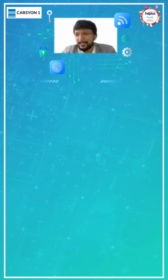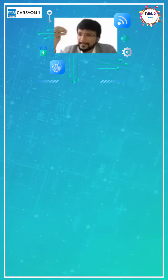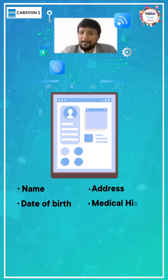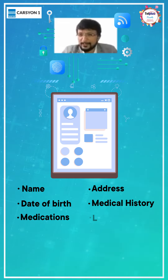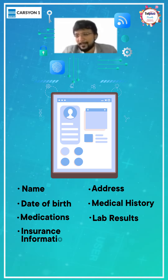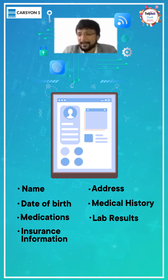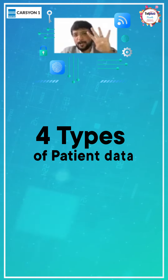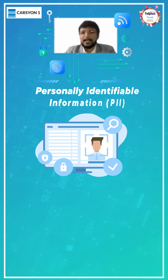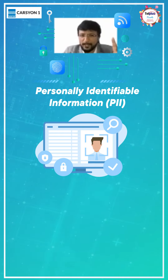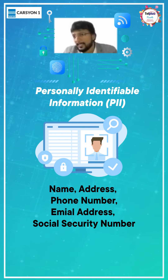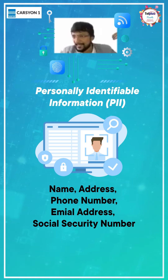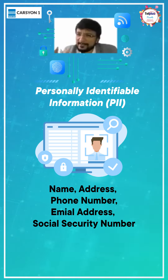Patient data can include name, address, date of birth, medical history, medications, lab results, and insurance information. I'm going to categorize it into four different types. The first is PII — personally identifiable information — which includes name, address, phone number, email address, and Aadhaar details.